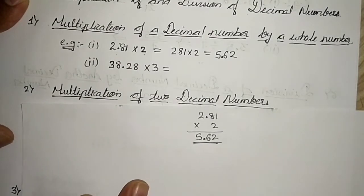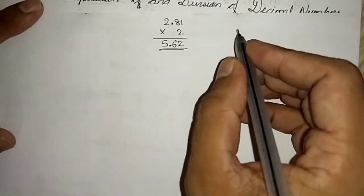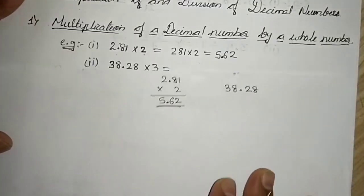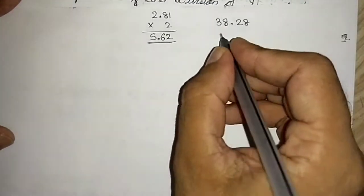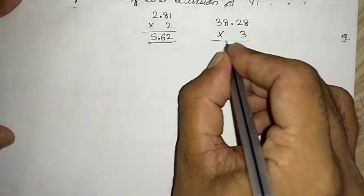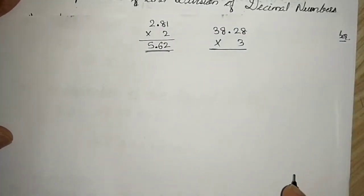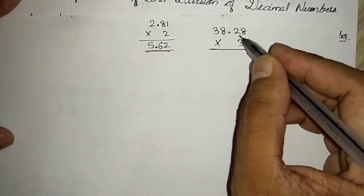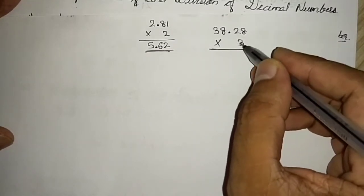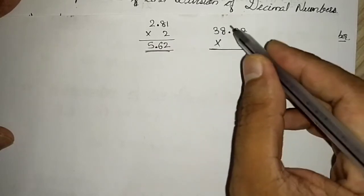Let us take another example: 38.28 × 3. Again, ignore the decimal point for now. We will place two decimal places in the answer after multiplying as if they are whole numbers.